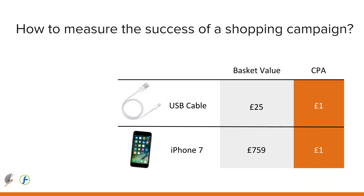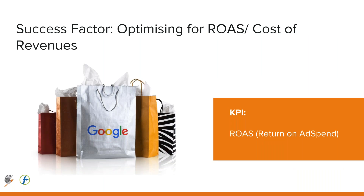By optimizing cost of revenues, you ensure your best-selling products are not hamstrung by budget. The next step for retailers to get a competitive advantage is to move to CPP — cost per profit. We consistently move clients from a cost of revenues model to a cost per profit model once we've collected enough data on conversions, and we can do this on each individual product.